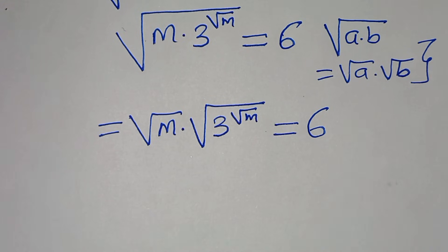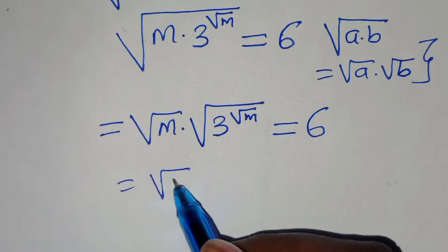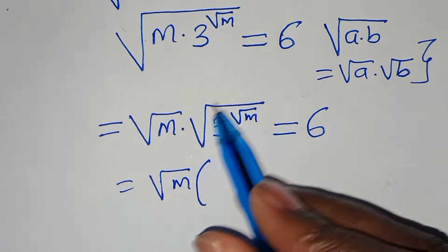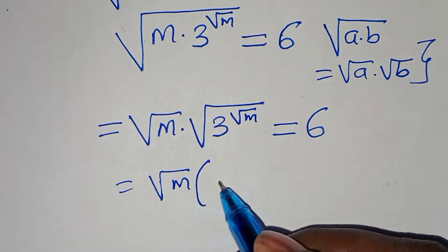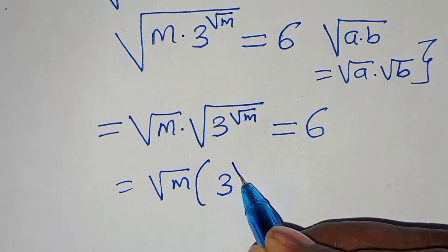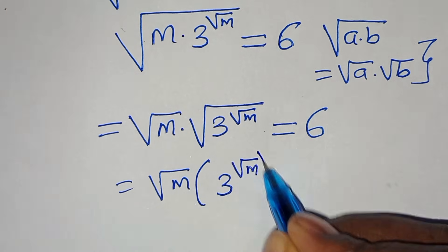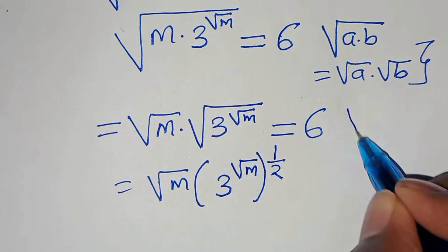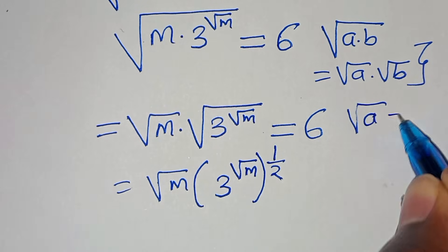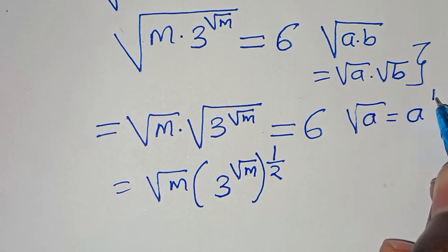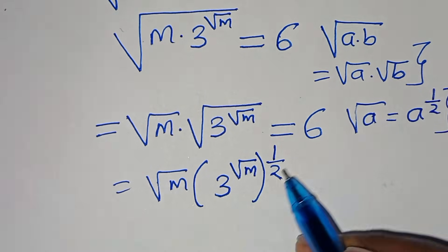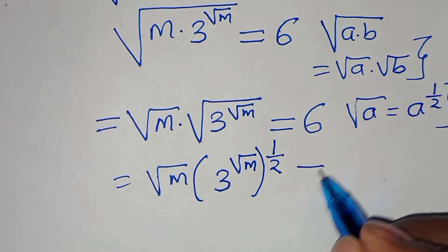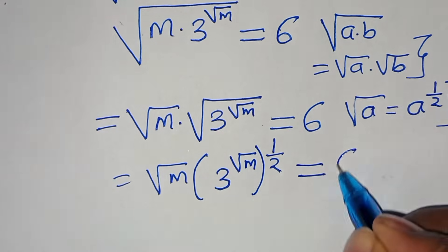Now we can express the square root of 3 to the power of square root of m as 3 raised to the power of square root of m raised to the power of a half, because square root of a is the same as a to the power of a half. So we have square root of m multiplied by 3 raised to the power of (square root of m raised to the power of a half), equal to 6.